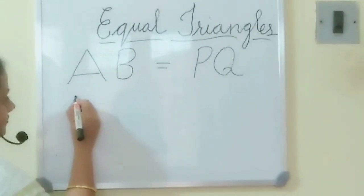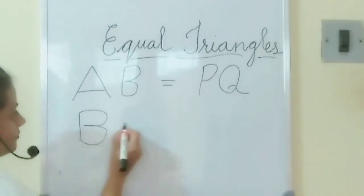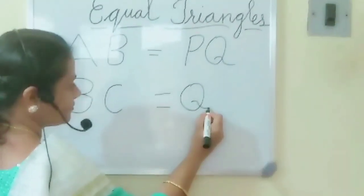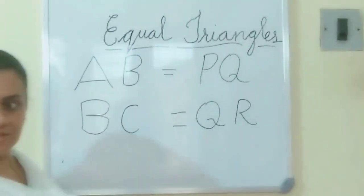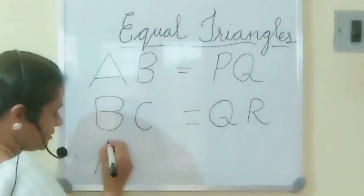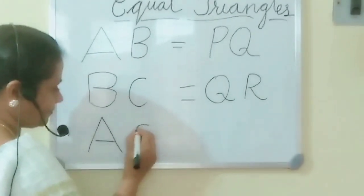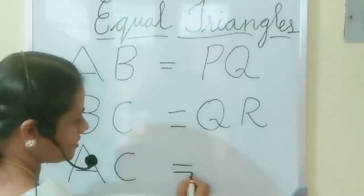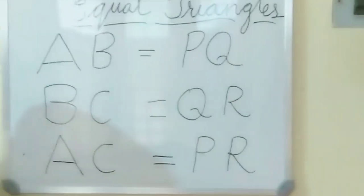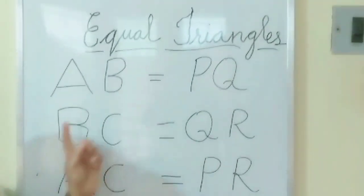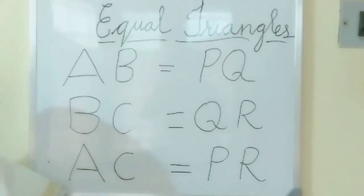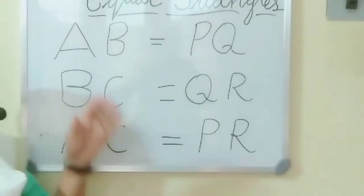Next, BC equals QR. And the third side AC equals PR. So the matching sides are: AB equals PQ, BC equals QR, AC equals PR. These are the matching sides of these two triangles — triangle ABC and triangle PQR.